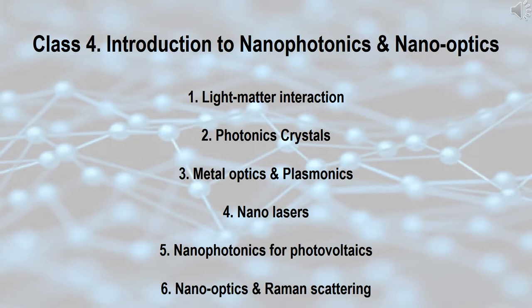In lecture 4, we focus on nanophotonics and optics. According to the National Academy of Science of the USA, this area of nanoscience, called nanophotonics, is defined as the science and engineering of light-matter interactions that take place on wavelength and sub-wavelength scales where the physical, chemical, or structural nature of natural or artificial nano-structured matter controls the interactions.